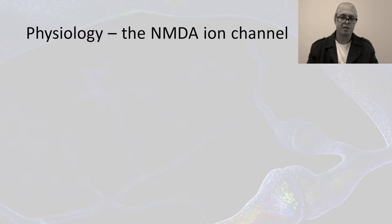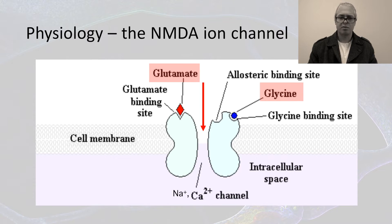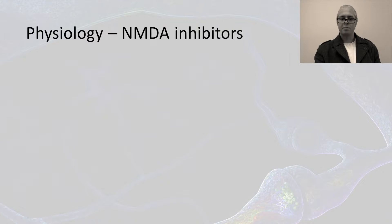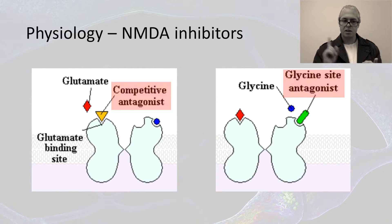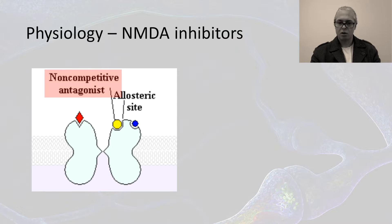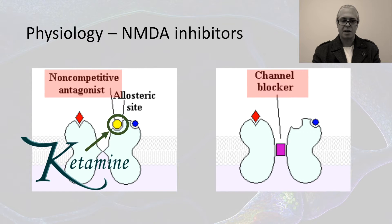Ketamine is an NMDA receptor antagonist, which refers to an ion channel and glutamate receptor protein found in nerve cells. NMDA, once bound by glutamate and glycine simultaneously, permits the entry of positively charged ions to flow through the cell membrane. NMDA has two types of competitive inhibitors: the glutamate inhibitor and the glycine inhibitor. NMDA also has a non-competitive inhibitor which binds to an allosteric site of the protein, and an uncompetitive inhibitor which acts as a channel blocker. Ketamine is a non-competitive antagonist.